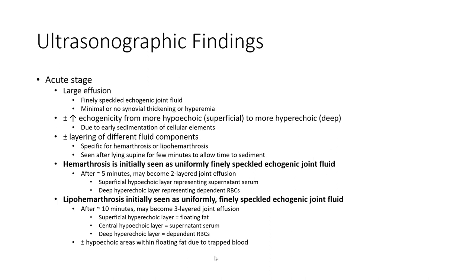Ultrasound findings. A joint effusion appears as an anechoic, plus or minus echogenic, ranging from hypoechoic to hyperechoic collection, plus or minus layering of different fluid components. Hemarthrosis is initially seen as uniformly finely speckled echogenic joint fluid. Lipohemarthrosis is also initially seen as uniformly finely speckled echogenic joint fluid.